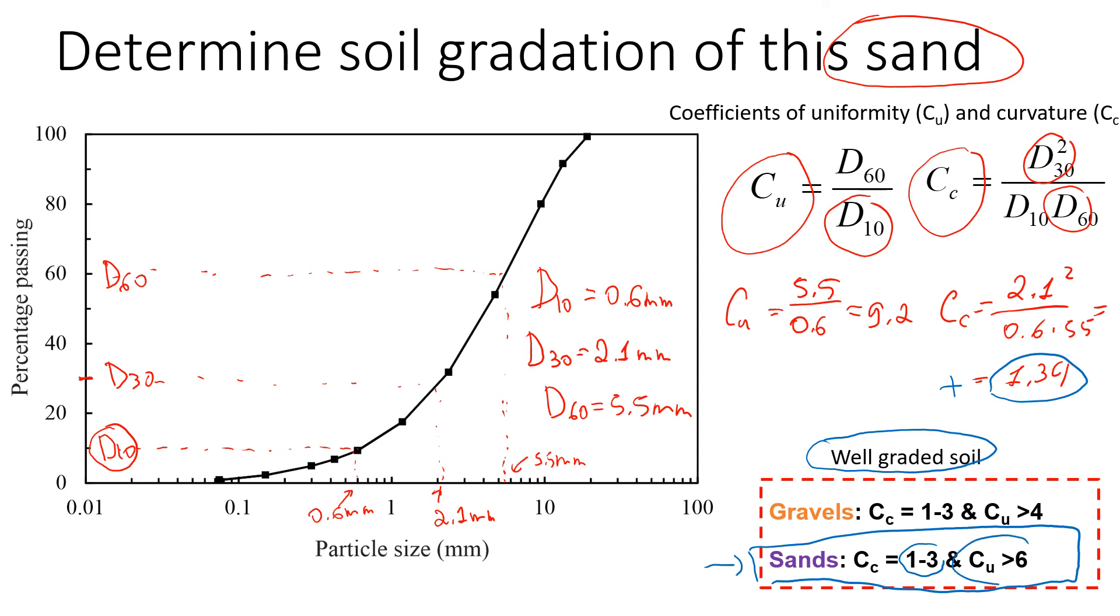Both coefficients meet the criteria, so in this case the soil will be classified as well graded. Typically we use a letter W to classify the soil which means well graded, and because we already know it is sand, the final classification of the soil is going to be sand well graded.